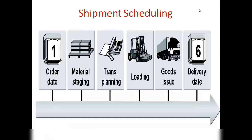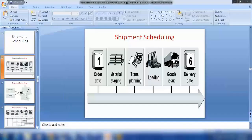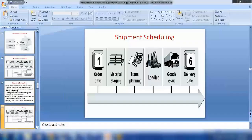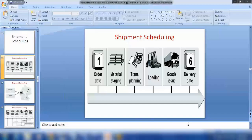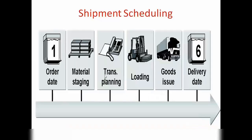As I said, there are different types of dates you can see in a sales order. Starting from order date — that is the date when we created the sales order. Then we have material staging date, transportation planning date, loading date, goods issue date, and delivery date. Let me show you what these dates mean.